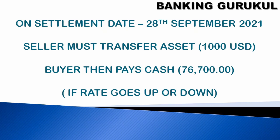On the settlement date — 20th September 2021 — the seller must transfer assets, meaning one thousand dollars, to the buyer. The buyer then pays 76,700 rupees to the seller. This rate was fixed on 6th November 2020. Whether the rate goes up or down, the seller has to give 1,000 USD to the buyer and the buyer has to pay 76,700 rupees to the seller — even if the rate becomes 50 rupees or 100 rupees.